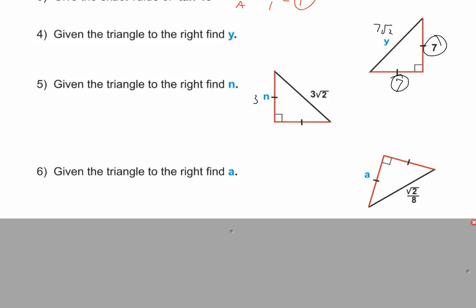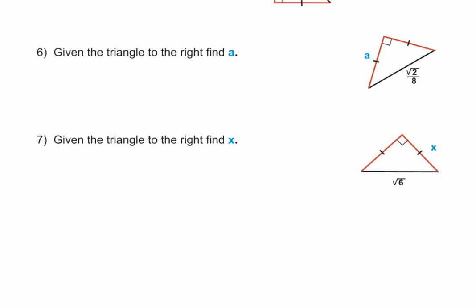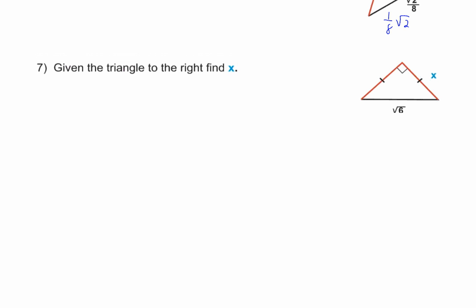Number 6 is a little more abstract. The hypotenuse is given as √2/8 instead of a whole-number multiple of √2. One-eighth times √2 is the same as √2 over 8, so the value of S is 1/8. For the last one, the hypotenuse is √6 instead of √2, so we can't use direct pattern matching. We'll make a proportion: put what we're looking for on the top left. The left side is my triangle, the right side is the pattern.